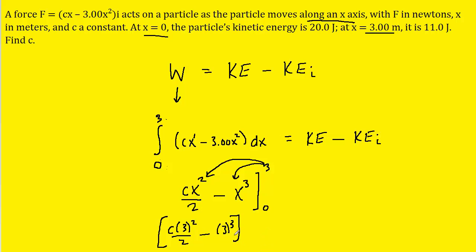This expression equals the final kinetic energy minus the initial kinetic energy. We can go ahead and plug in those values: the final kinetic energy was 11 joules and the initial kinetic energy was 20 joules. When we subtract these, we get negative 9 joules.